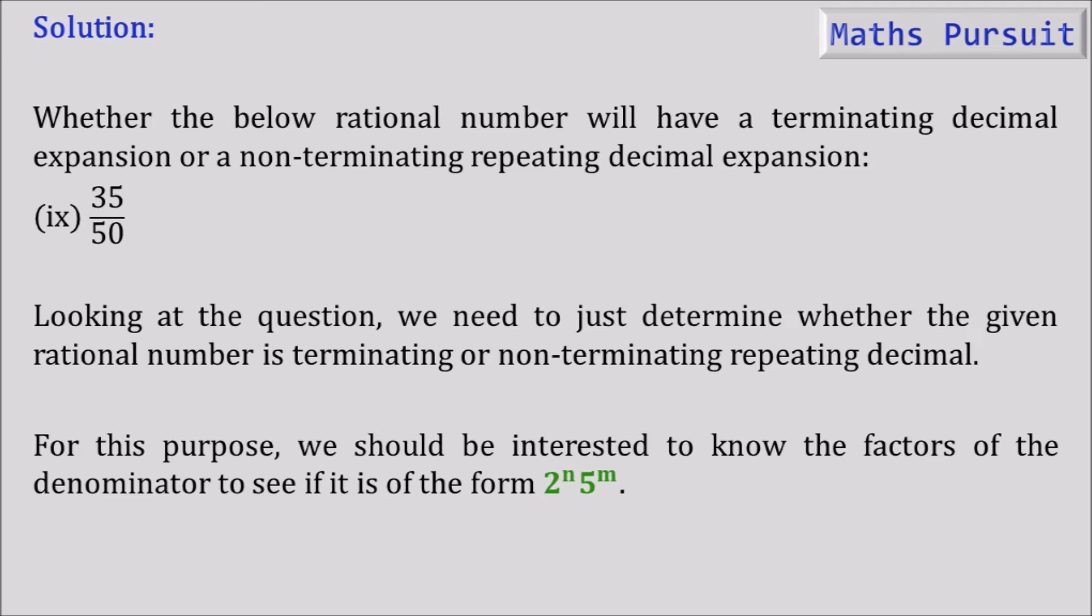For this purpose we are more interested to know the factors of the denominator to see if it is of the form 2 to the power n and 5 to the power m. I believe you know the concept of rational number where we always put a rational number in the form p by q and q is not equal to 0, and in order to determine whether the given rational number is terminating or non-terminating, we need to see that q should be in the form 2 to the power n and 5 to the power m.